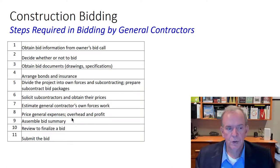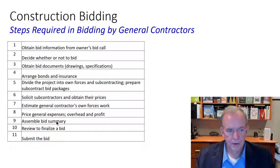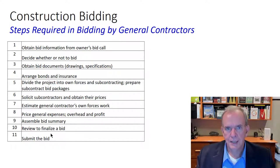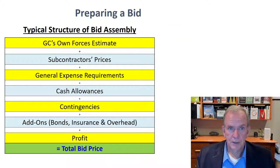You solicit subcontractors, obtain their prices, estimate the GC's work for your own forces and management fees, price the general expenses, overhead and profit, and assemble a bid summary. Review it, make very sure it's correct, and submit the bid. It sounds straightforward but it gets chaotic because there are a lot of subs coming in with last-minute prices, you've got maybe 45 minutes before it closes, you've got to pull prices together and physically submit the bid. It can be a little hair-raising, and mistakes can be made.